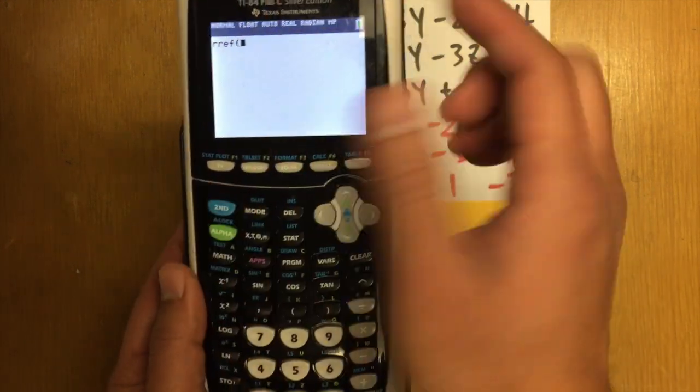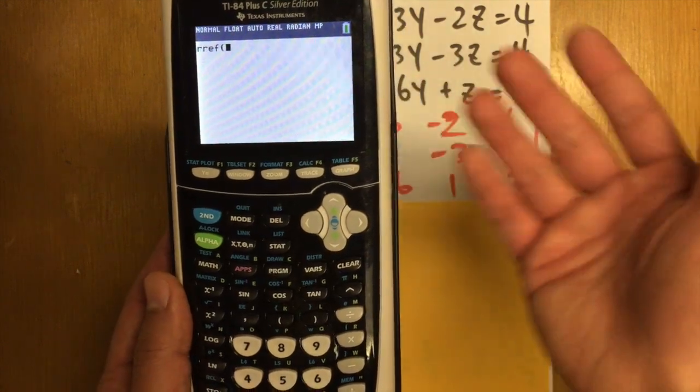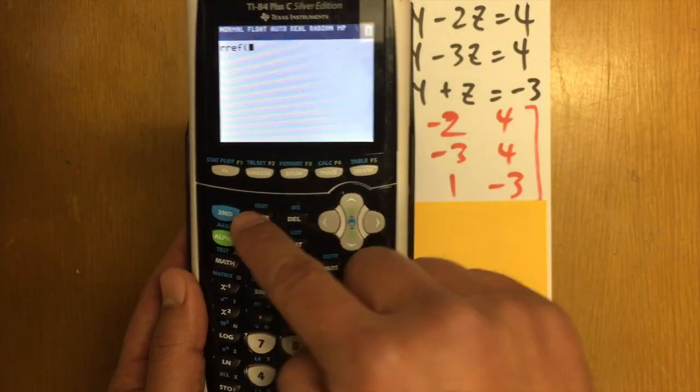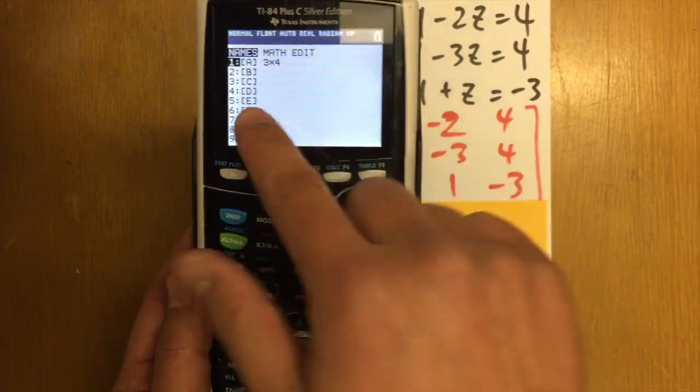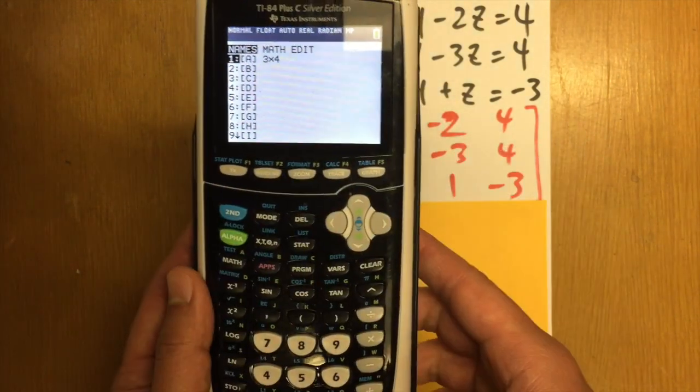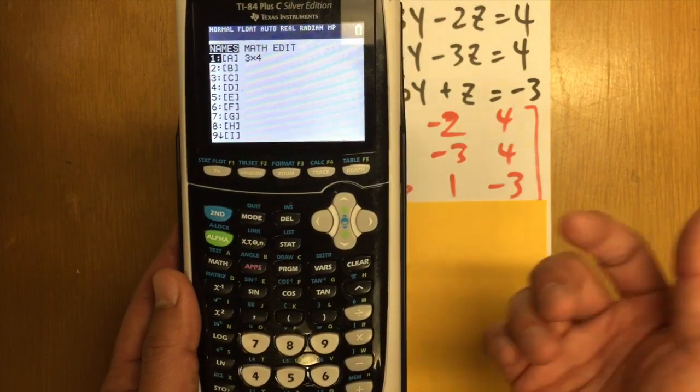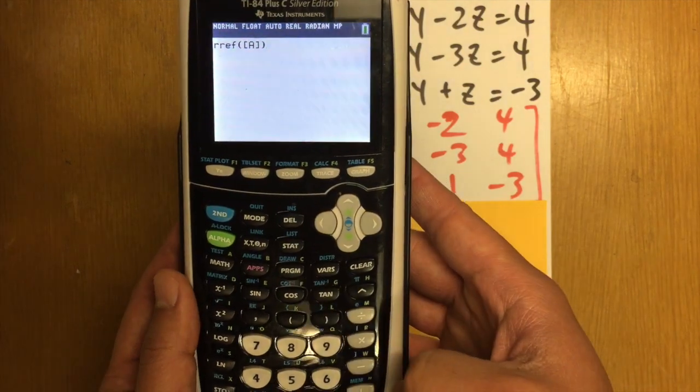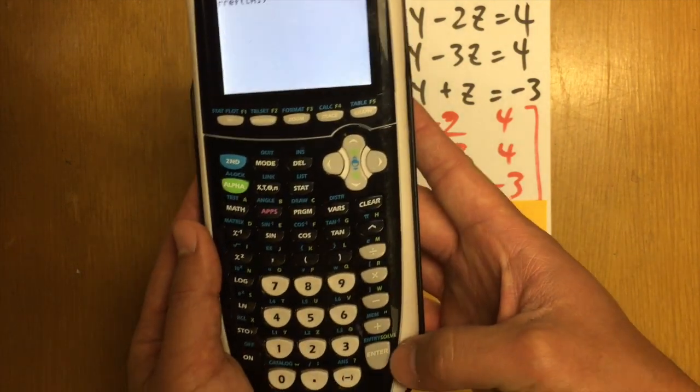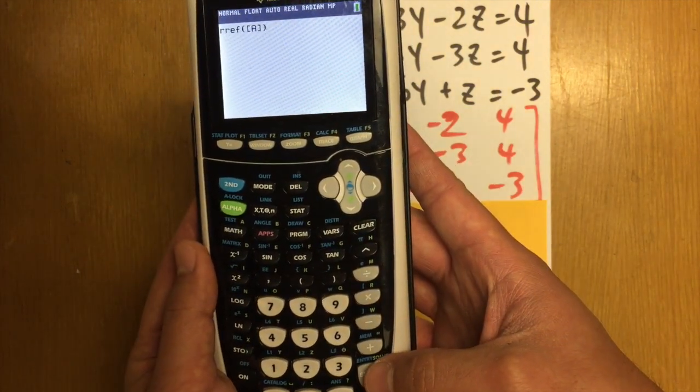And then we have to enter the matrix that we put in, which is the matrix A. So go back to second matrix again. This time, we are going to select the first one, which is the matrix A, the 3x4 matrix that we entered earlier. And then we are going to close the parentheses and hit enter.